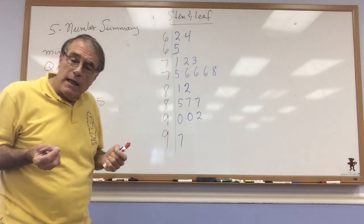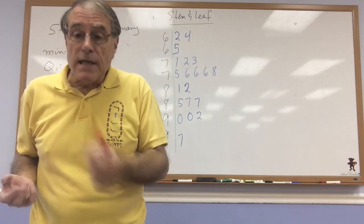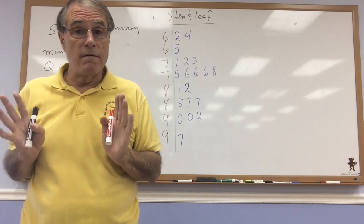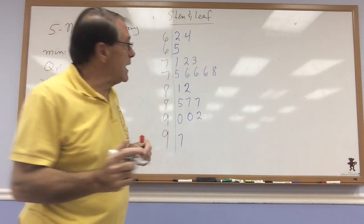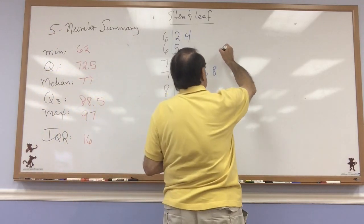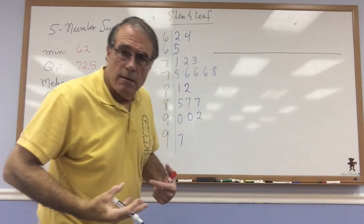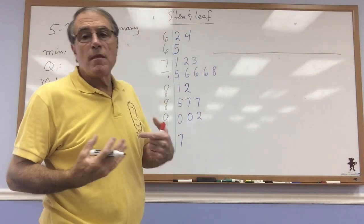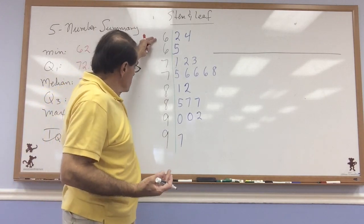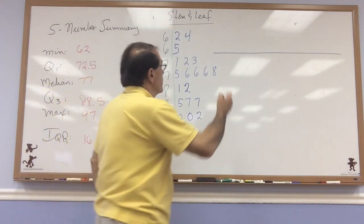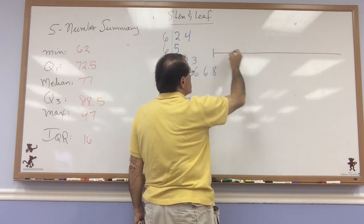Now the stem and leaf can be considered a graph of our data. And the second graph I'd like to show you, which I find very helpful, is a dot plot. Now for the dot plot, I need a number line. And I need to increment my number line from the minimum value to the maximum.